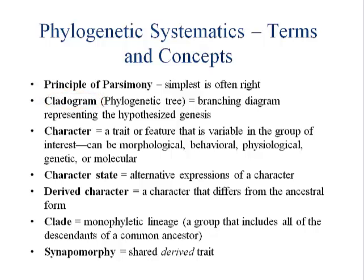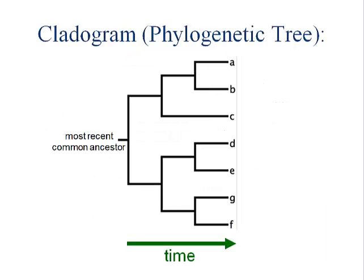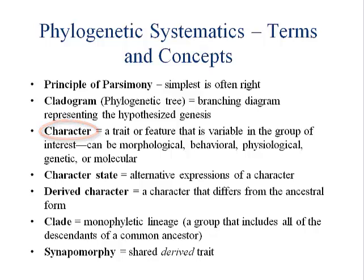A cladogram is just a tree — a branching diagram representing how things are related. A character is anything that evolved that can be shared between two groups, like feathers, a behavior, or the way your intestines circle. A character state is the state you're in for that particular character — so it's a feather that's elongated, or a down feather, or a behavior like a polygamous mating system.